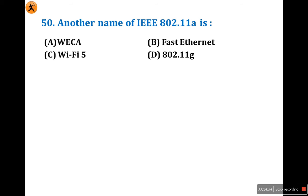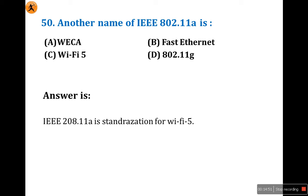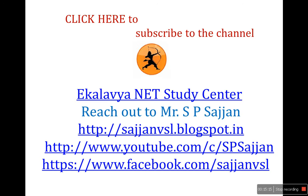The 50th question: another name of IEEE 802.11a is — this is also a current trends and technology question, direct and straightforward. The answer is Wi-Fi 5. IEEE 802.11a is the standardization for Wi-Fi 5, meaning it sends 5 gigahertz of data. So option is C. In this series we have discussed questions 41 to 50, which is the end of June 2005. I hope you enjoyed my lecture series — if you enjoyed it, please subscribe to the channel and press the like button. If you have any queries, just email me. Thank you for watching.